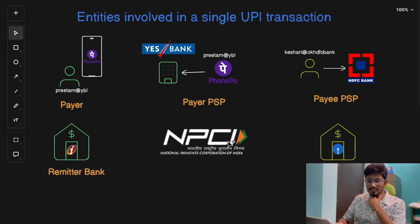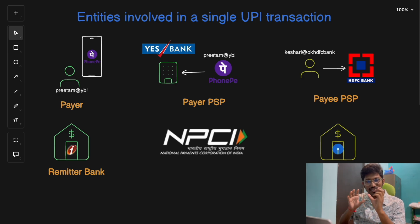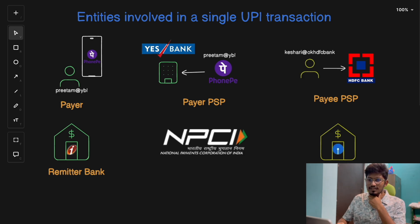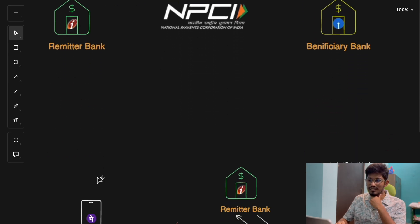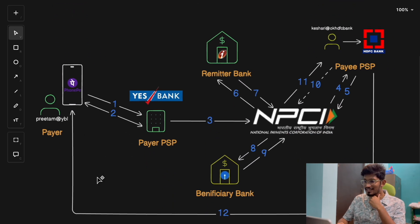Lastly, the core of the entire architecture is the NPCI network — the National Payments Corporation of India — which handles the entire switching and routing of transactions. All these entities play together and make a transaction execute successfully. Now let's break down the 12-step process involved in a typical UPI transaction and how the magic happens behind the scenes.